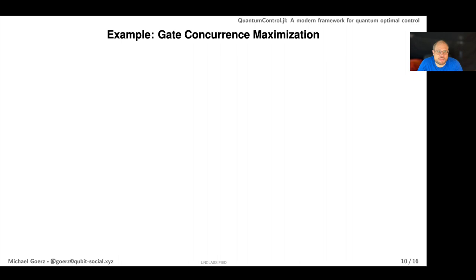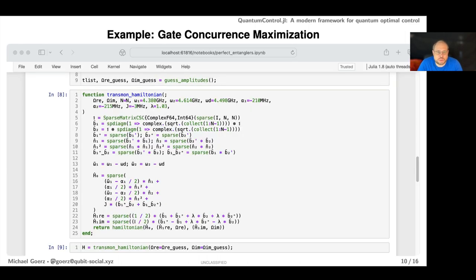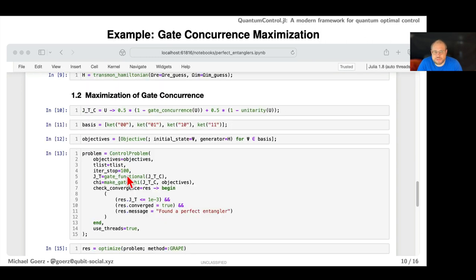How does that actually look in practice? You can do all of this work in a Jupyter notebook. You write out your Hamiltonian in Julia code and it's really written basically straight from what you would write on paper. Julia is really quite expressive. Then you define your functional just like we had it on the previous slide, you define your basis states for the two-qubit basis, and then you define these objectives which is saying how all of the basis states are supposed to evolve.